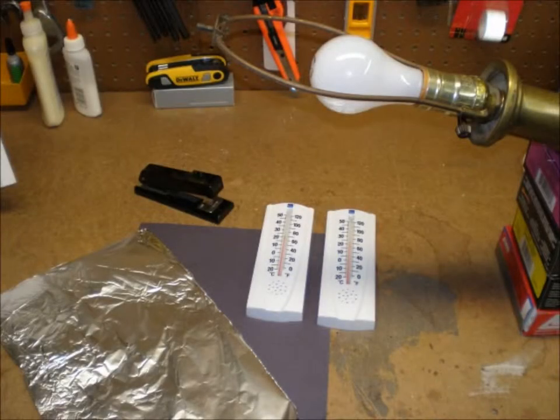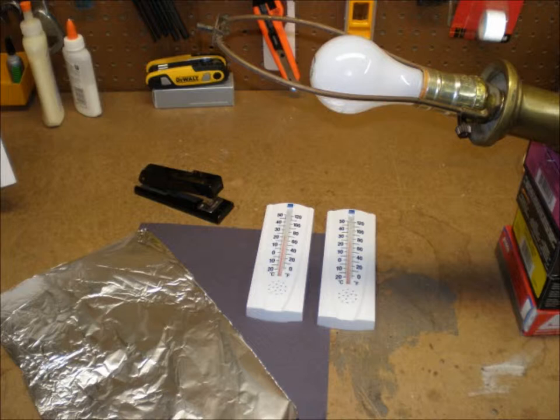Here's what we'll use: a piece of aluminum foil, a piece of black construction paper, two thermometers, a stapler, and an incandescent lamp. Ours had a 75 watt bulb in it, but this works even better with a larger bulb, like a 100 watt bulb.